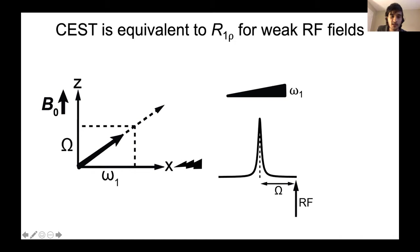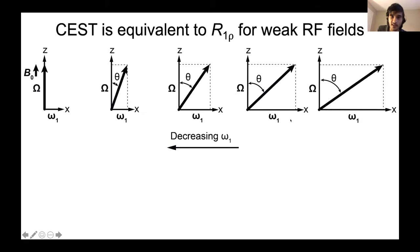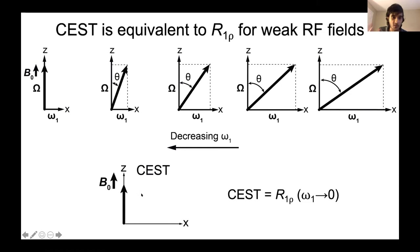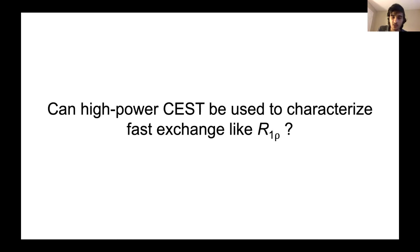There is a well-known equivalence in the literature: CEST is equivalent to R1 rho when the spin lock field is very weak. In R1 rho, as you decrease the spin lock power, the effective field slowly moves toward the z-axis, which is exactly analogous to CEST where magnetization is along z. We wanted to ask the inverse question: if we increase the spin lock power in CEST, could that be used to characterize faster exchange processes?